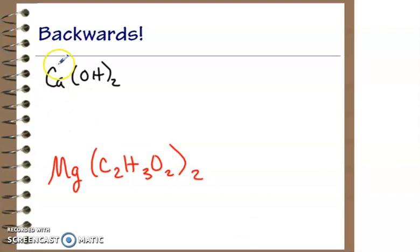We just named the two ions. What's the name of this ion right here? Calcium. What's the name of this ion here? Hydroxide.